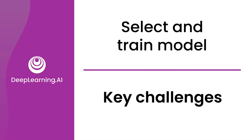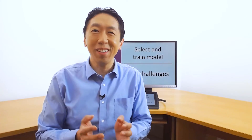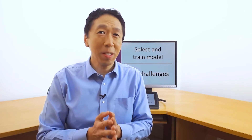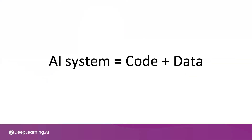What is hard about training a machine learning model that does well? Let's look at some key challenges. One framework to keep in mind when developing machine learning systems is that AI systems and machine learning systems comprise both code — meaning the algorithm or the model — as well as data.